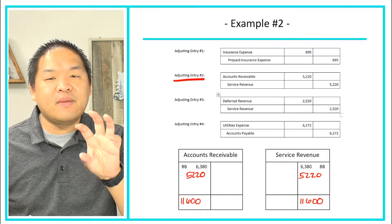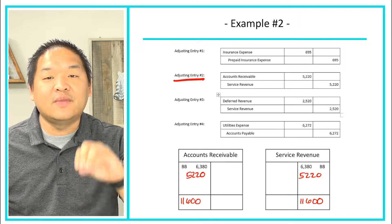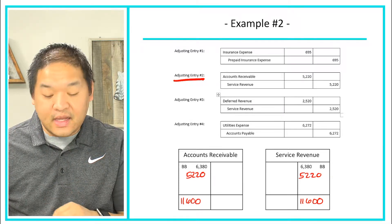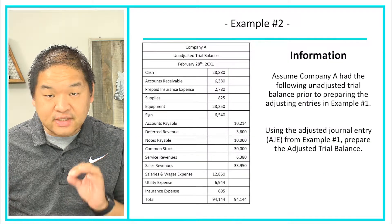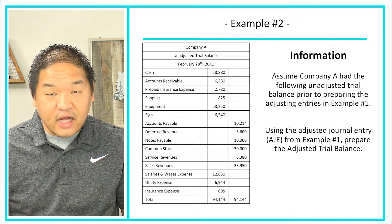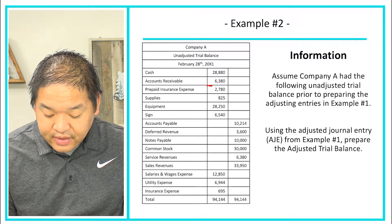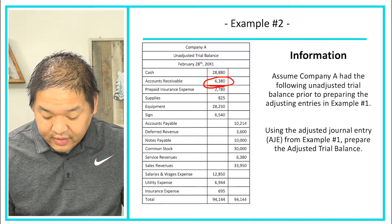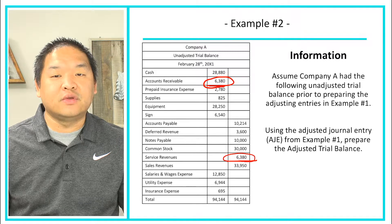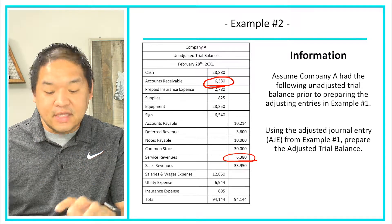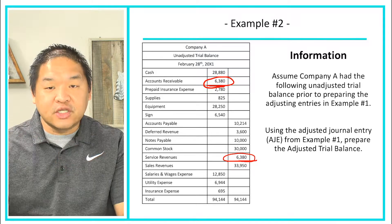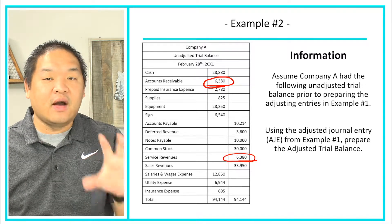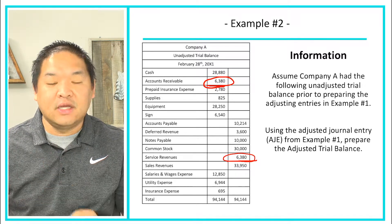You might wonder where the beginning balance comes from — it comes from the unadjusted trial balance. Accounts receivable shows $6,380, and if I go back to the unadjusted trial balance, accounts receivable is $6,380. Sales revenue also started at $6,380. BB means beginning balance, and that comes from the unadjusted trial balance. So from the unadjusted trial balance, we post the adjusting entries, get the totals, and that prepares the adjusted trial balance.